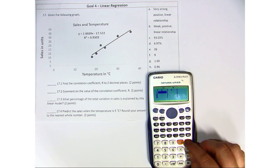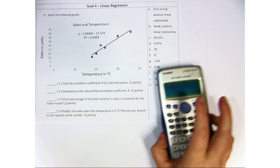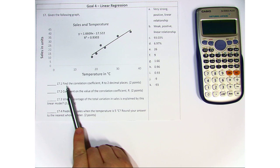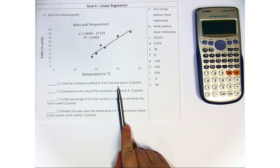So I'm going to go ahead and hit AC, go back to home, and we're going to focus on the graph. Given the following graph with sales and temperature, we need to first find the correlation coefficient R to two decimal places.